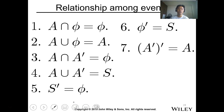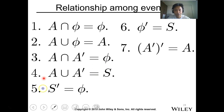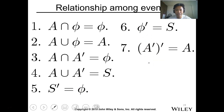Another relationship: the intersection of event A and the empty set is just the empty set. The union of event A and the empty set is just A. The intersection of A and its complement is the empty set, and the union of A and its complement is the sample space. The complement of the sample space is the empty set, and the complement of the empty set is the sample space. The complement of the complement of A is just event A.